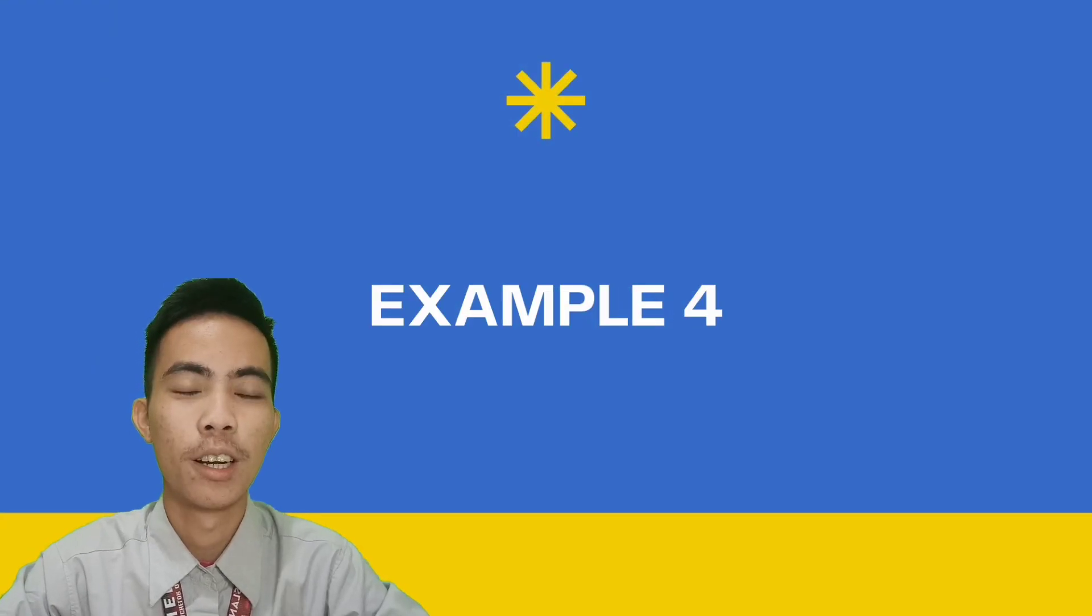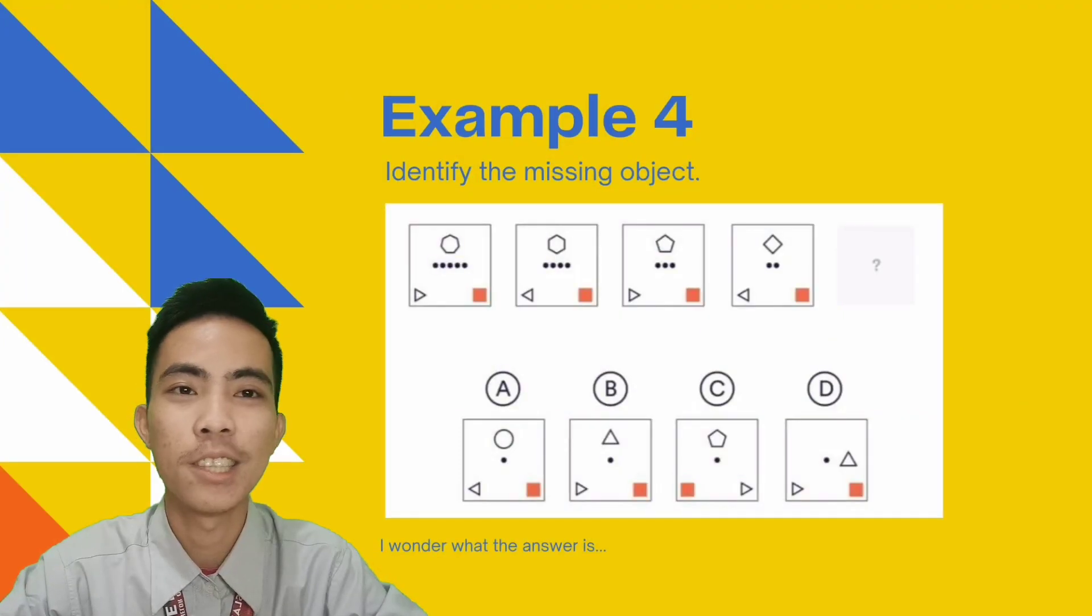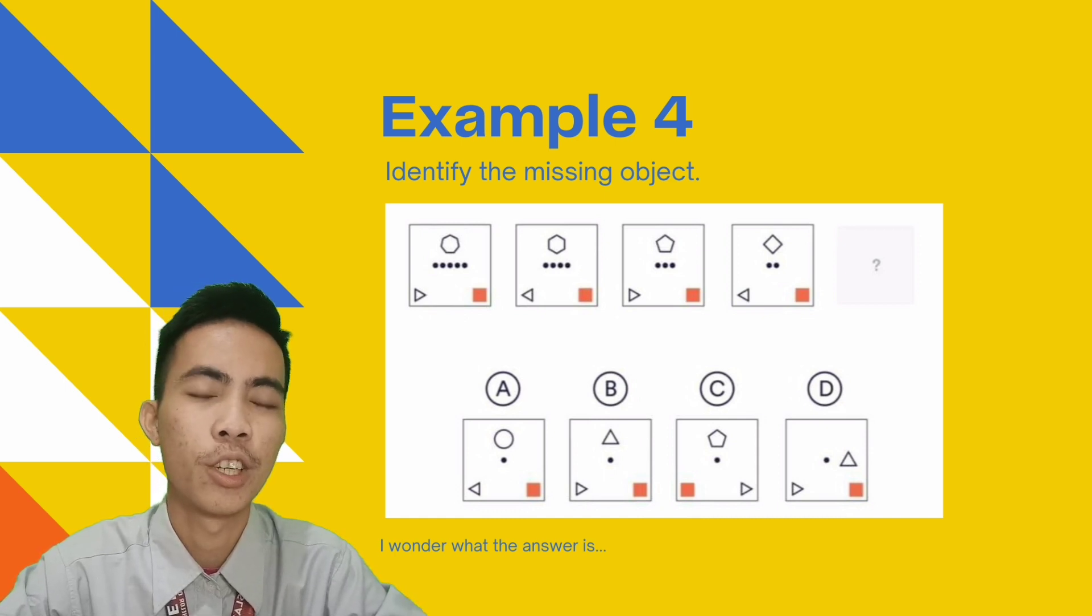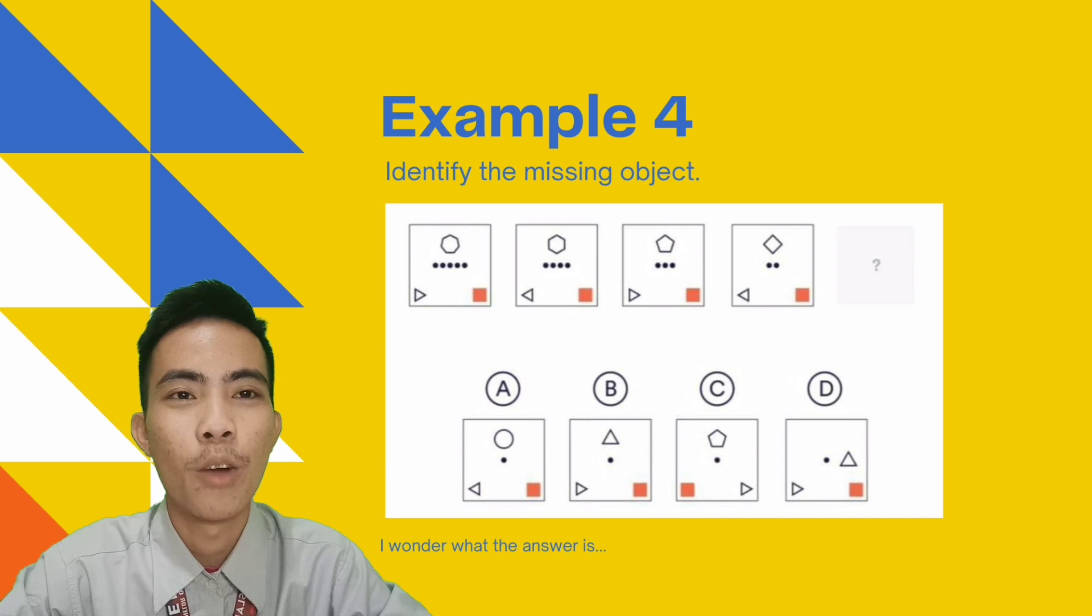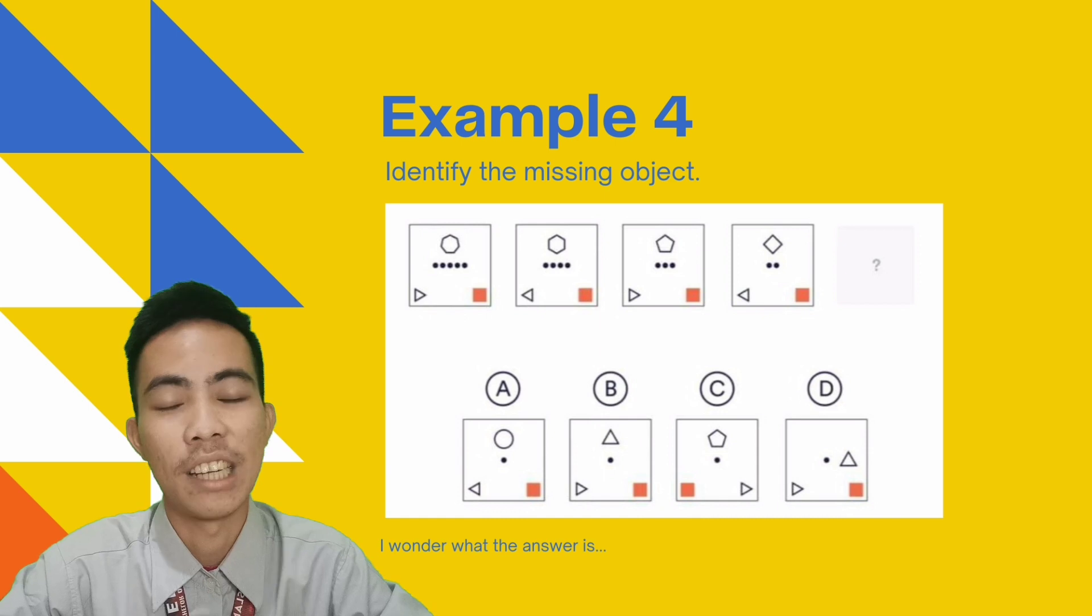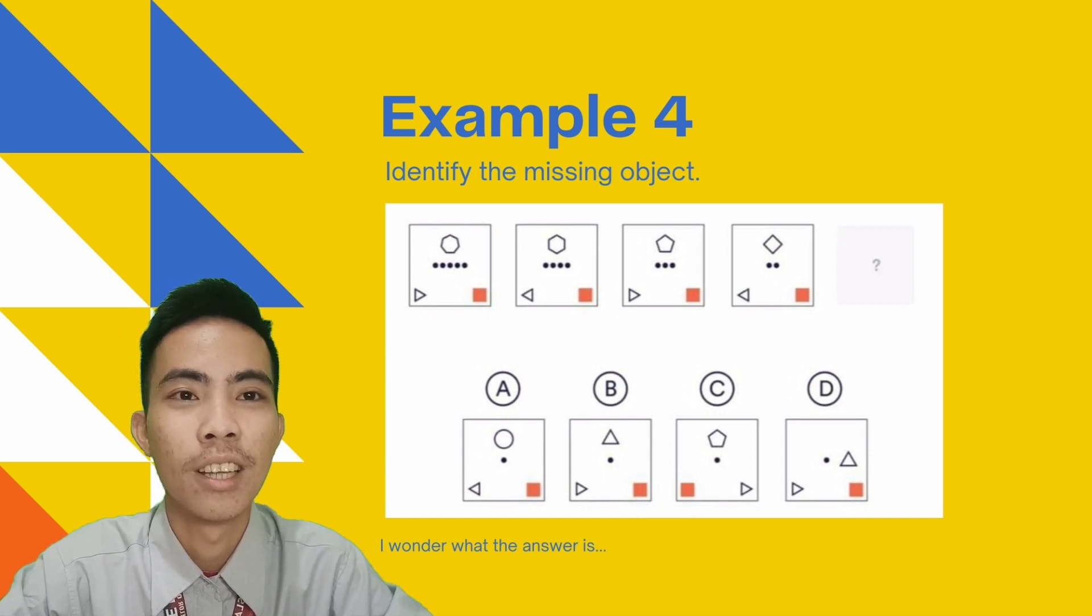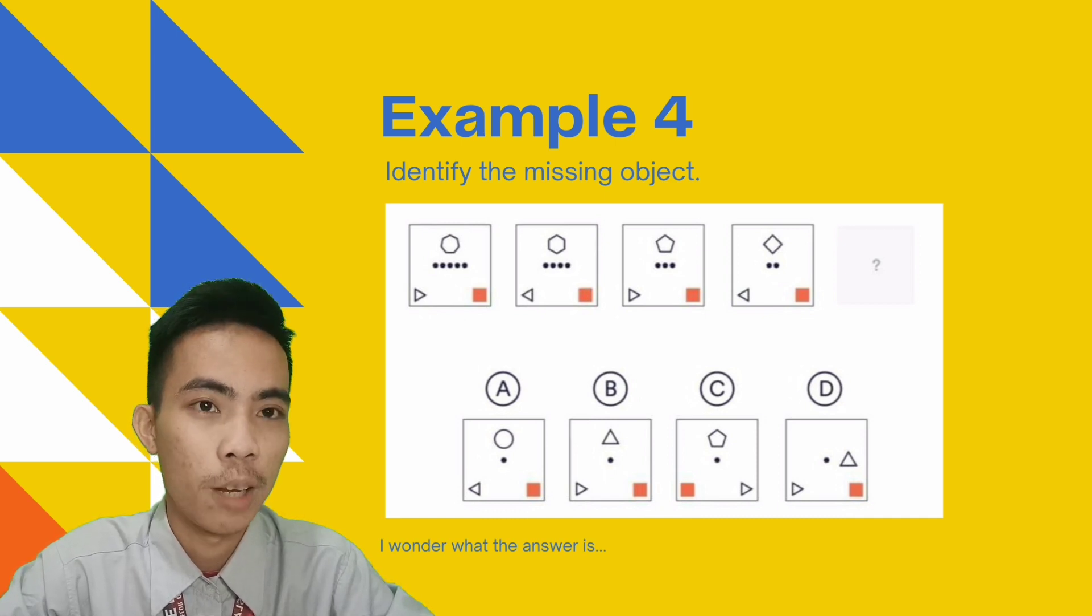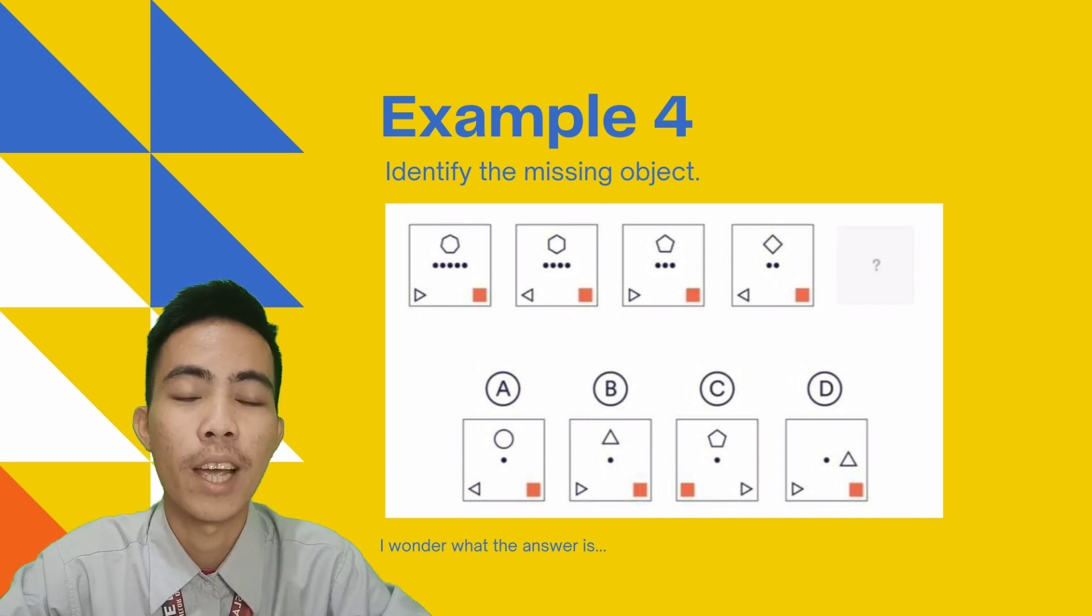Example number four, complete the sequence. We have here in the sequence four figures, and we are currently looking for the fifth figure to come up. There are four rules consistent in the sequence. The first rule is that the dots appearing in the center are decreasing by one as the sides of the shape are also decreasing by one. And the triangles located in the bottom left corner are flipped sideways, where the orange box located in the bottom right corner stays the same.